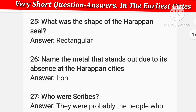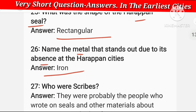What was the shape of the Harappan seal? The shape was rectangular. Name the metal that stands out due to its absence at Harappan cities. The metal that was absent was iron.